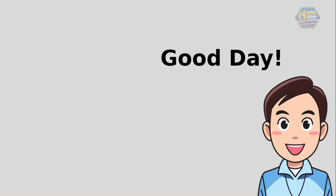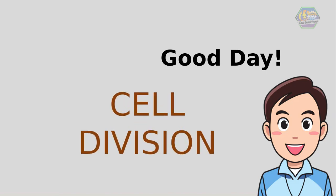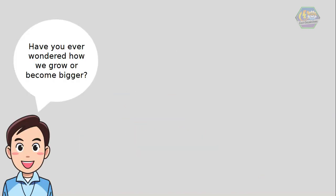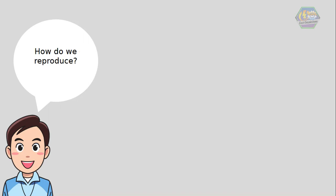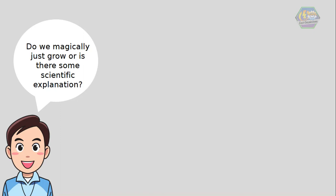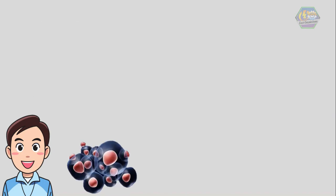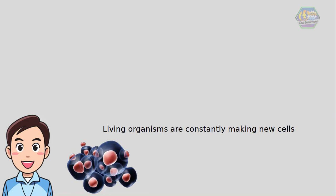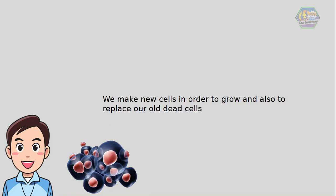Good day learners, this is Easy Engineering. For today's topic we're going to talk about cell division. Have you ever wondered how we grow or become bigger? How do we reproduce — in other words, how do we make flesh of our own? Well, basically it starts with ourselves. Living organisms are constantly making new cells. We make new cells in order to grow and also to replace our old dead cells. The making of new cells is cell division.